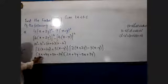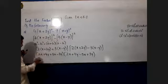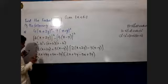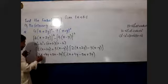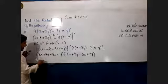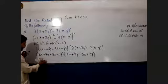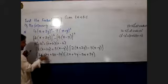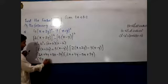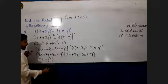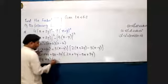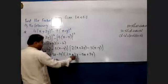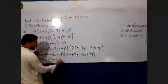Now, we add x terms together: 2x plus 3x gives 5x. And 4y minus 3y gives y. Similarly for the other bracket: 2x minus 3x gives minus x, and 4y plus 3y gives 7y.